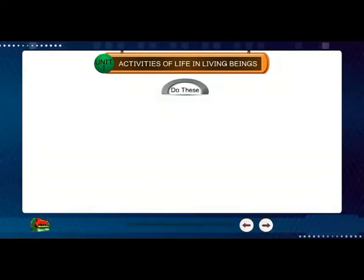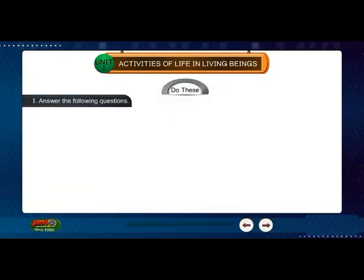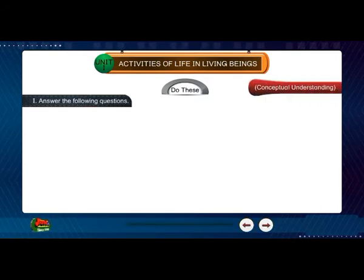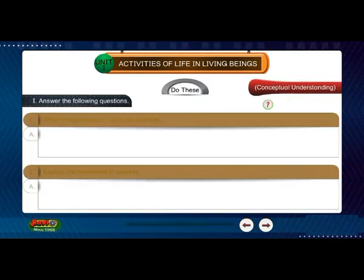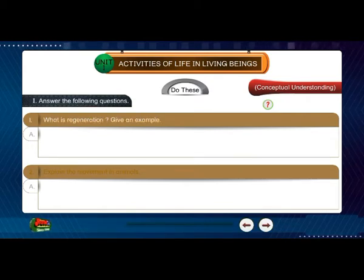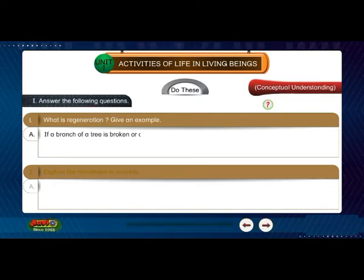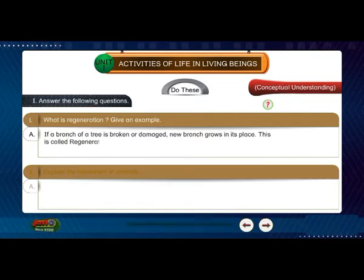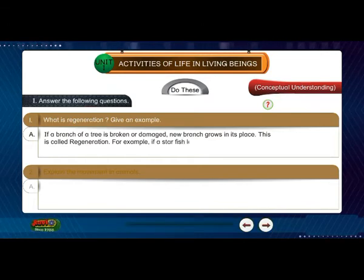Do these. Answer the following questions. Conceptual understanding. Question 1: What is regeneration? Give an example. Answer: If a branch of a tree is broken or damaged, a new branch grows in its place. This is called regeneration. For example, if a starfish loses an arm, a new arm is grown.